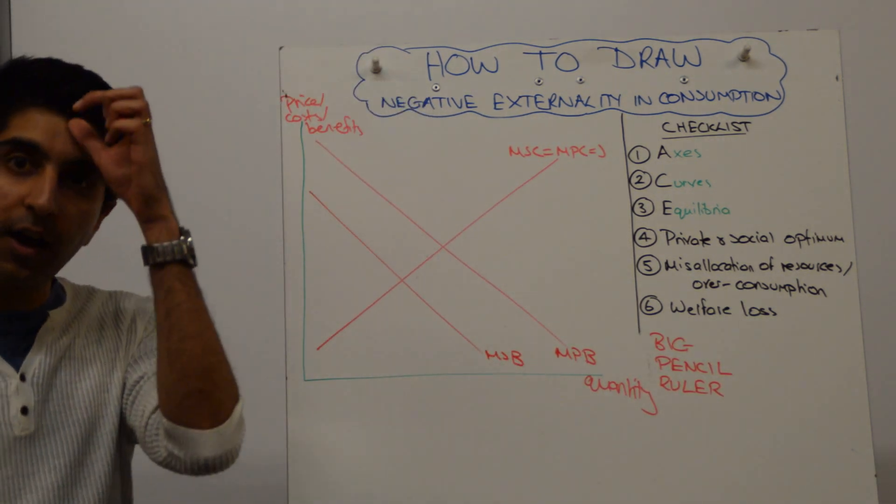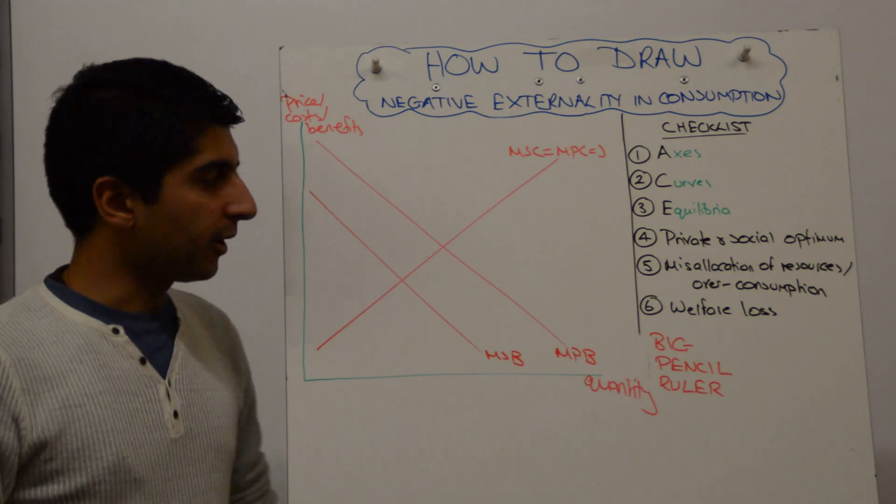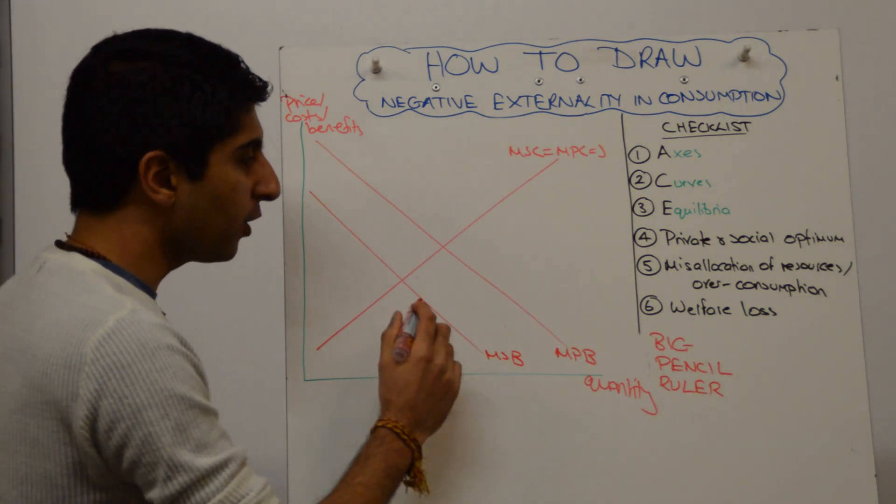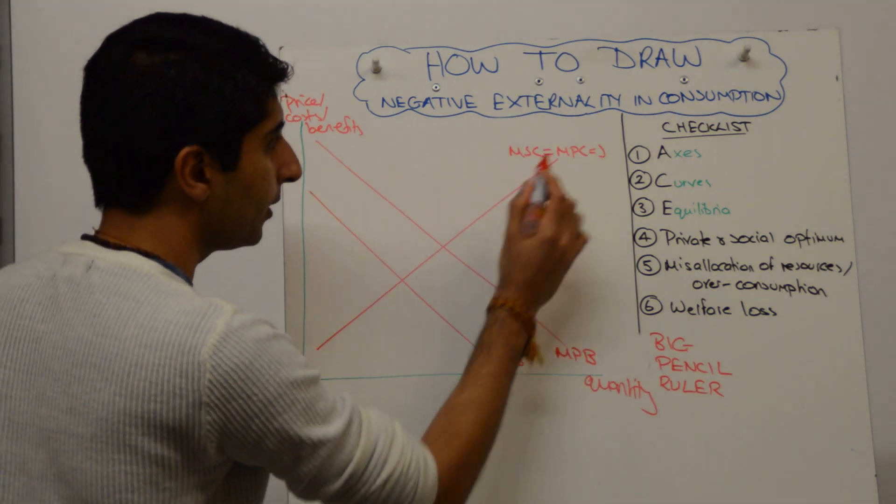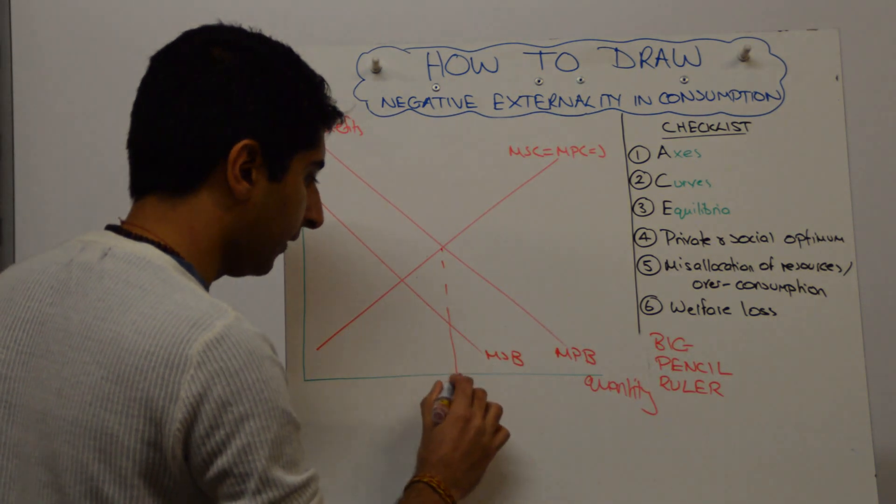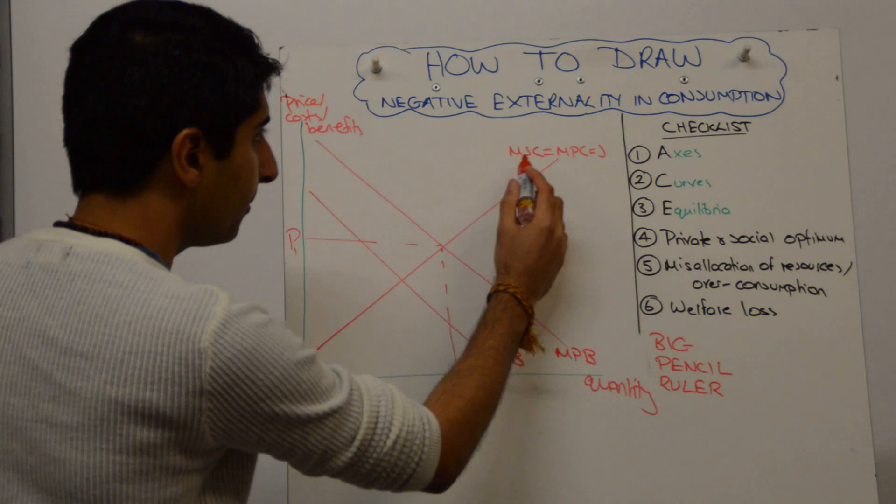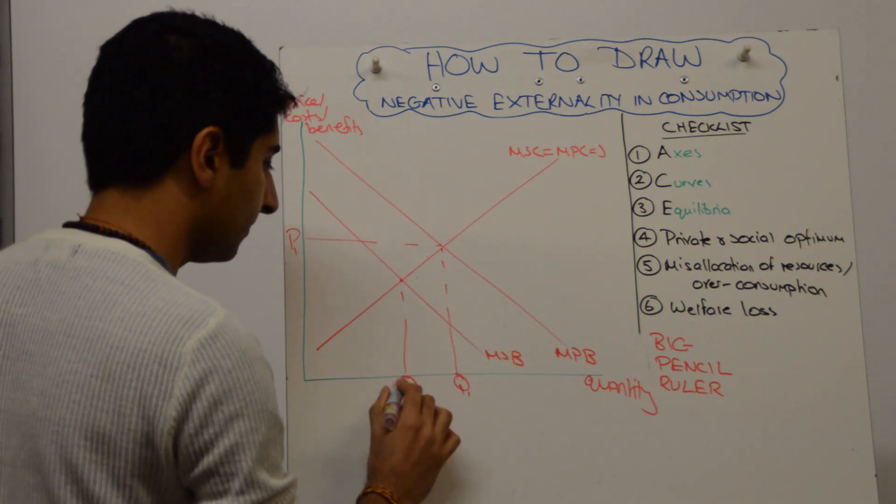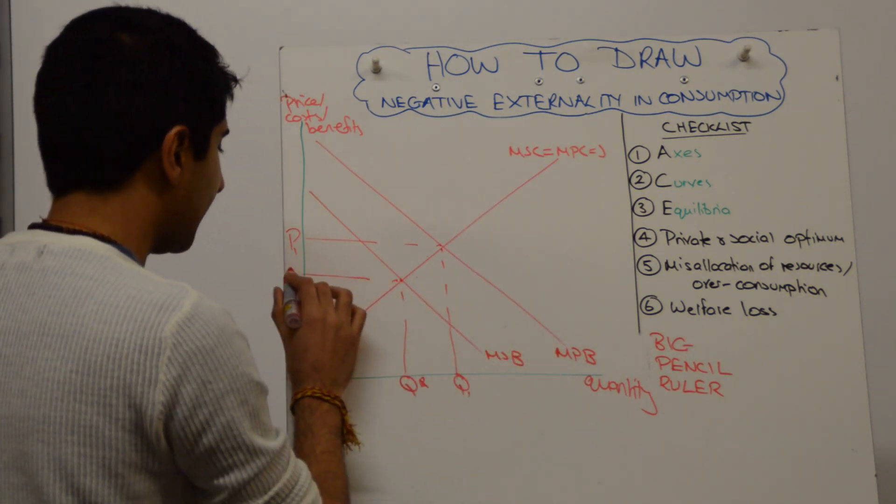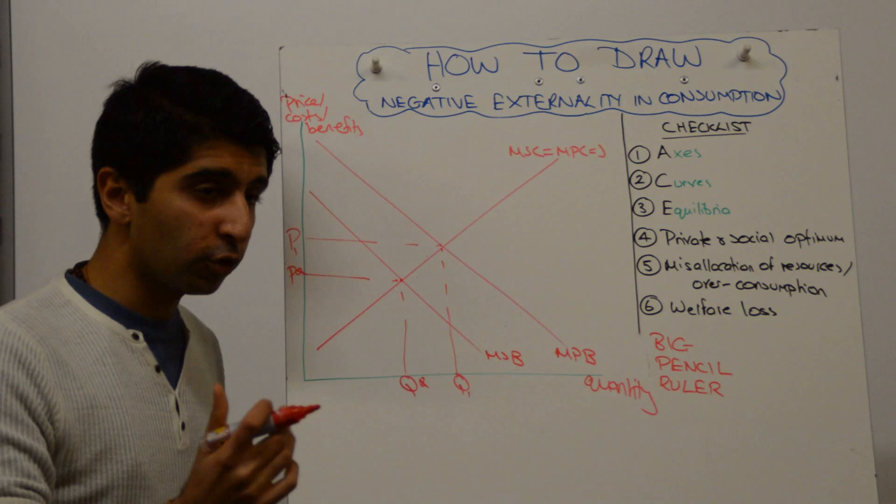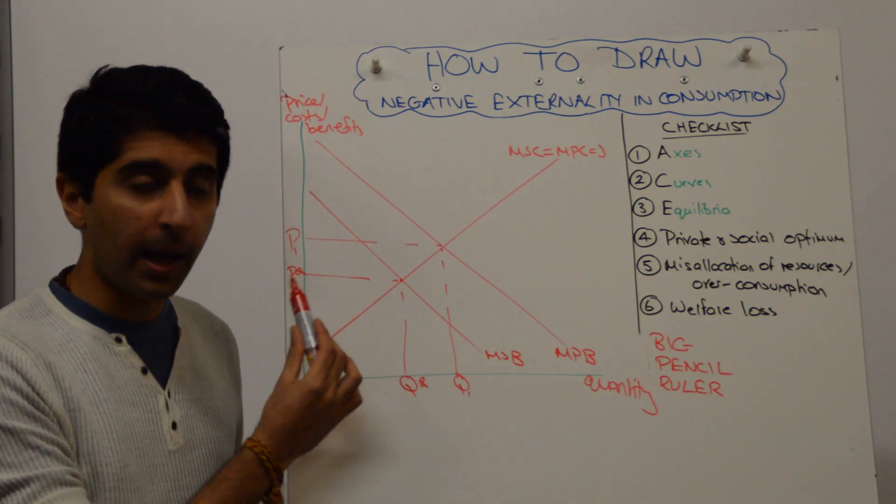Lovely. That's the hard work done. Now let's label our equilibrium. We need to label our private optimum, which is where MPB is equal to MPC. And that is there at Q1 with a price here at P1. Social optimum is where MSB is equal to MSC. Make it clear to the examiner you know it's the social optimum by labeling it Q star and P star.